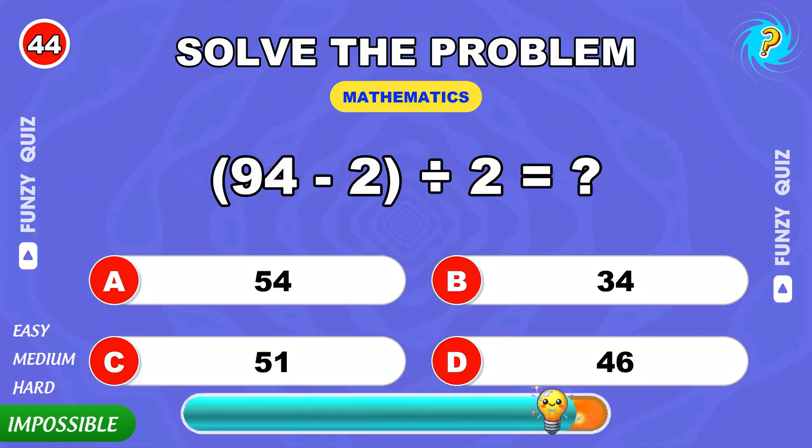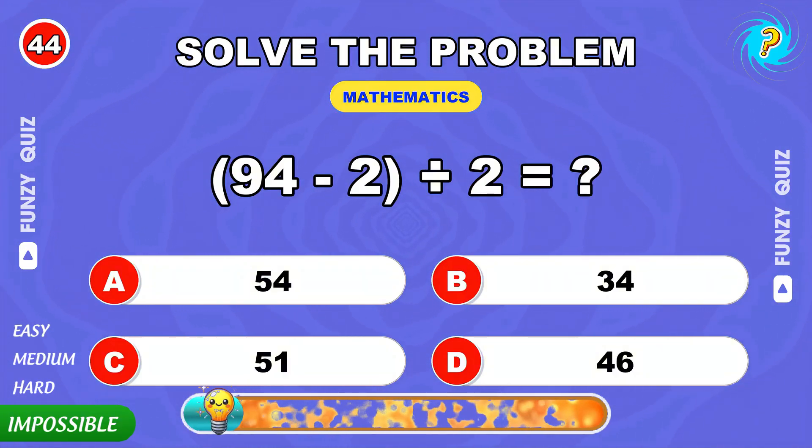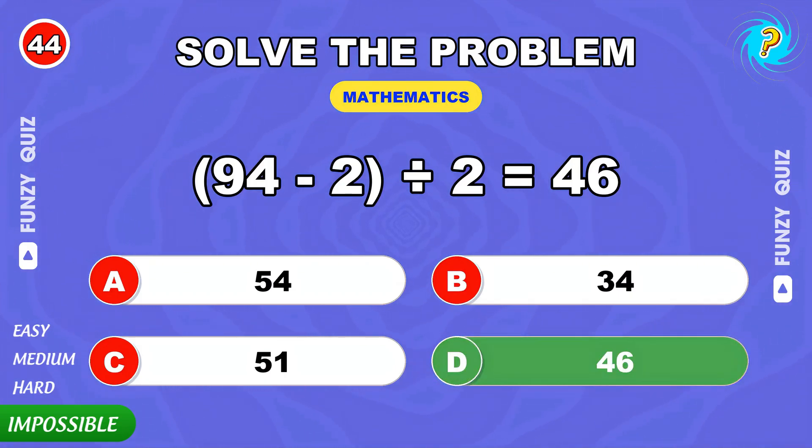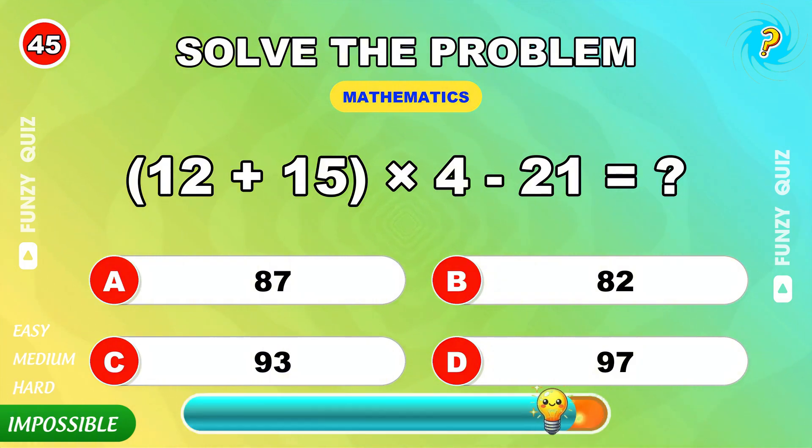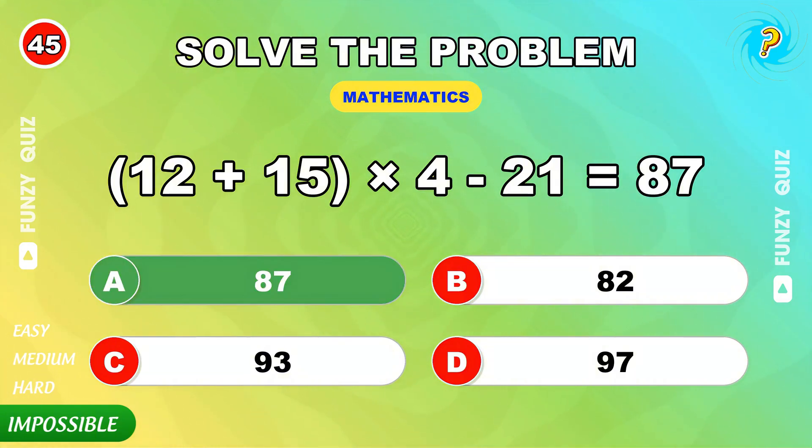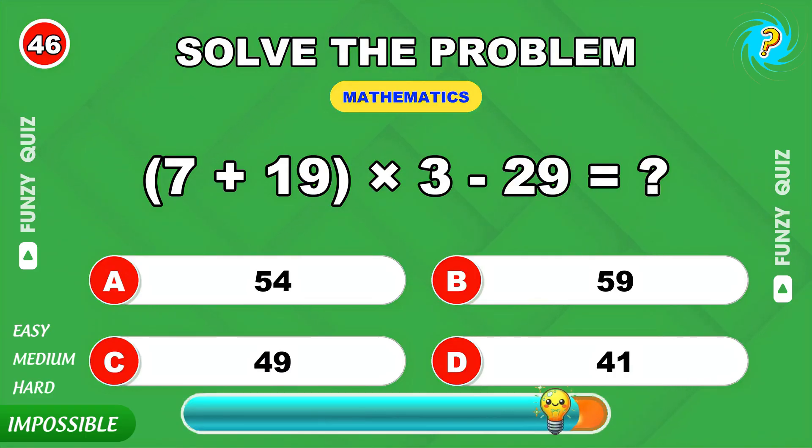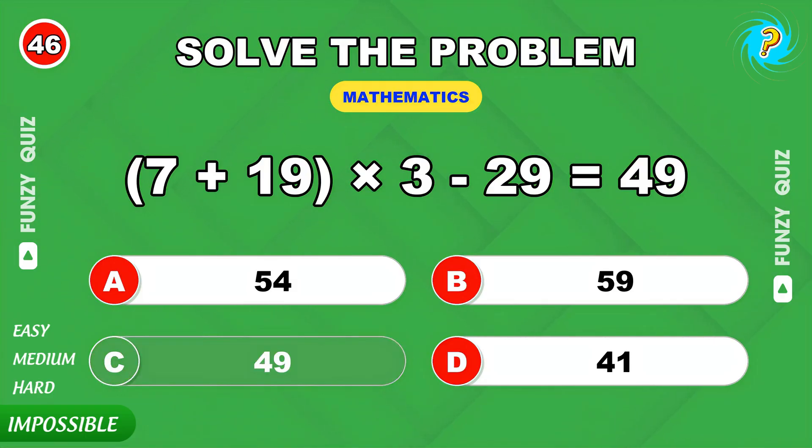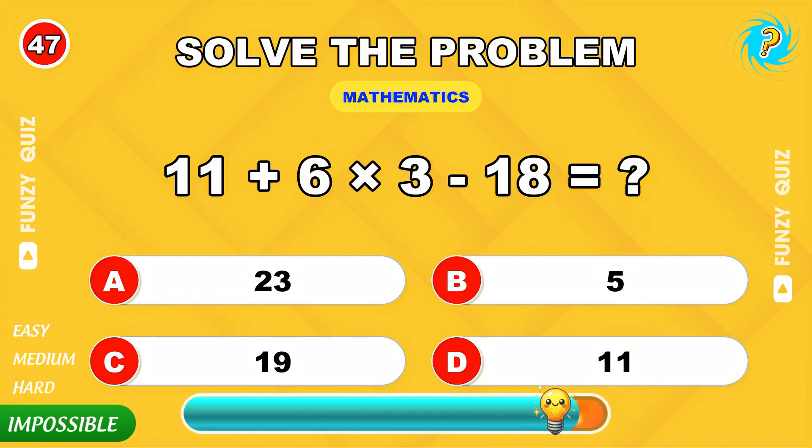35 plus 9 times 3 minus 8. 54. What's 94 minus 2 divided by 2? 46. 12 plus 15 times 4 minus 21. That makes 87. 7 plus 19 times 3 minus 29. 49. Brilliant. Solve 6 plus 6 times 3 minus 18. 11.